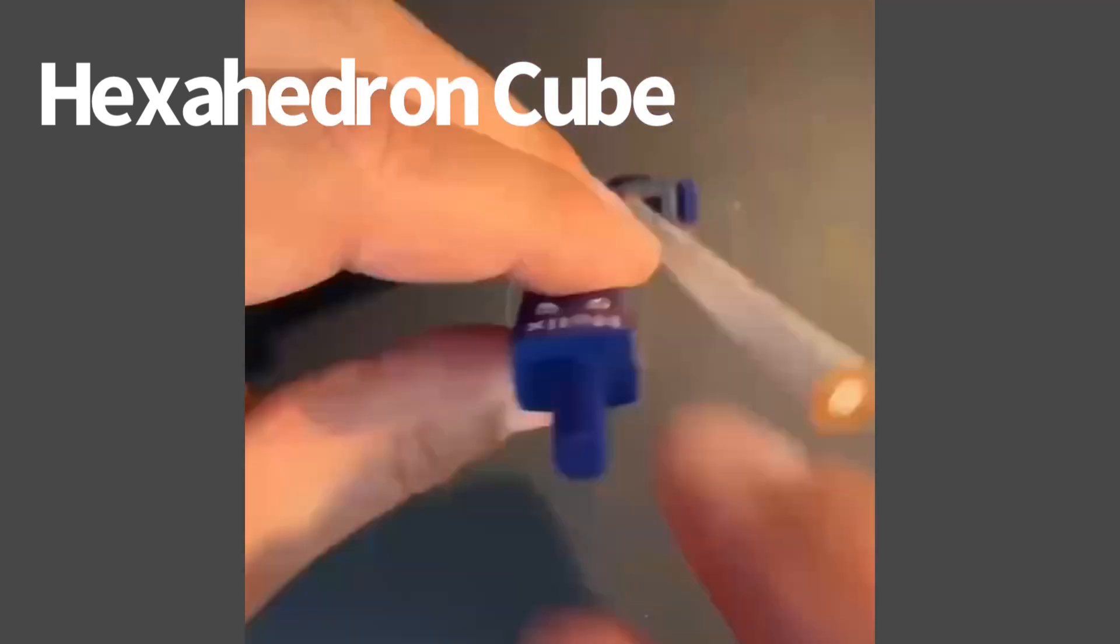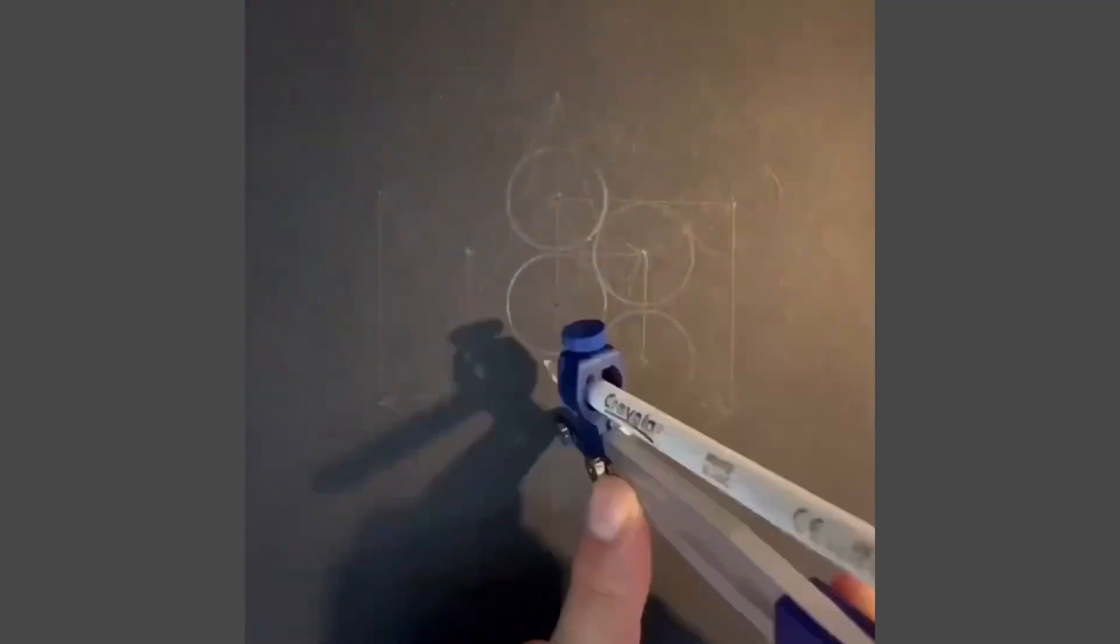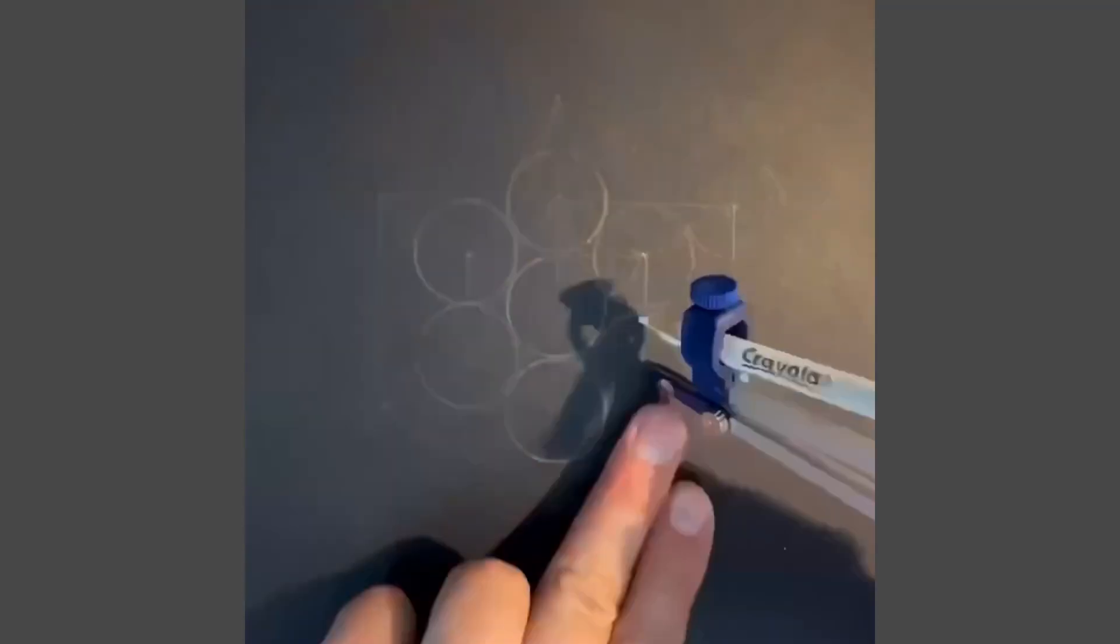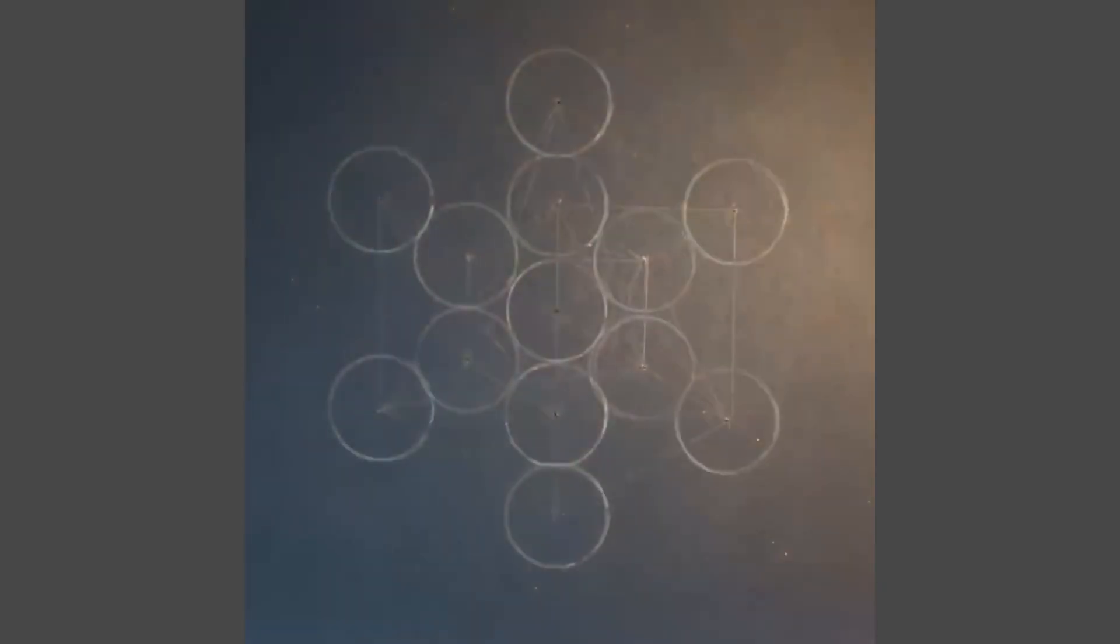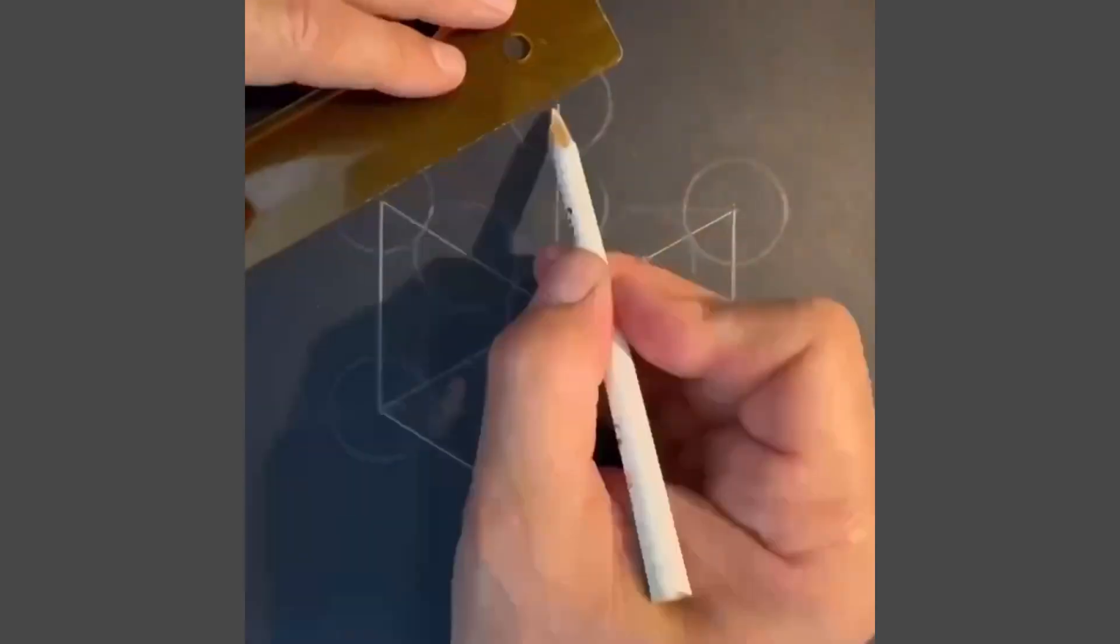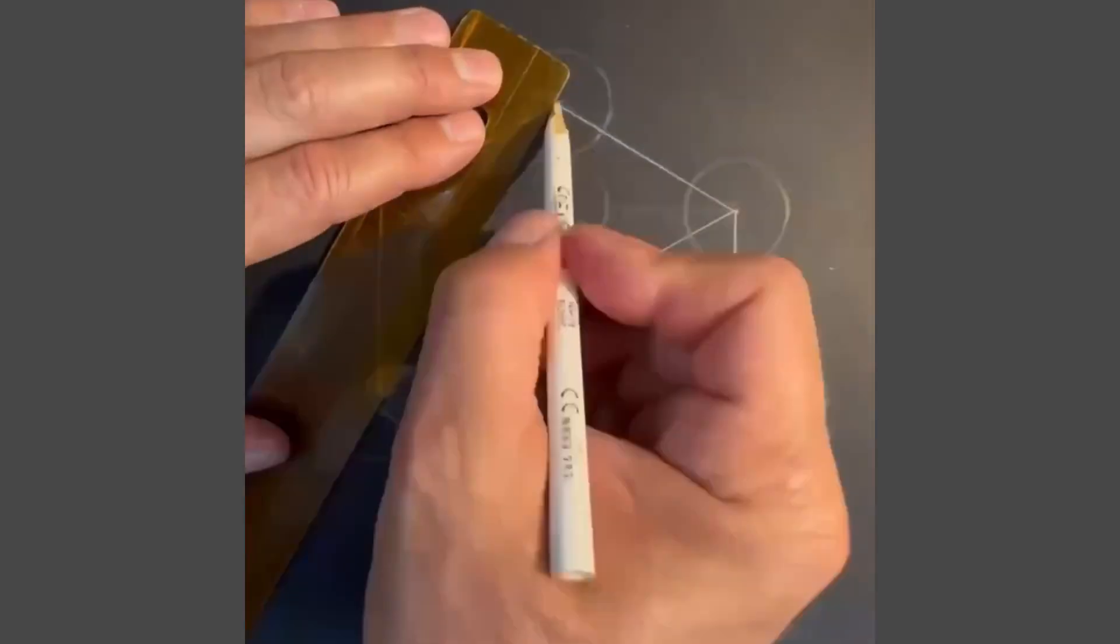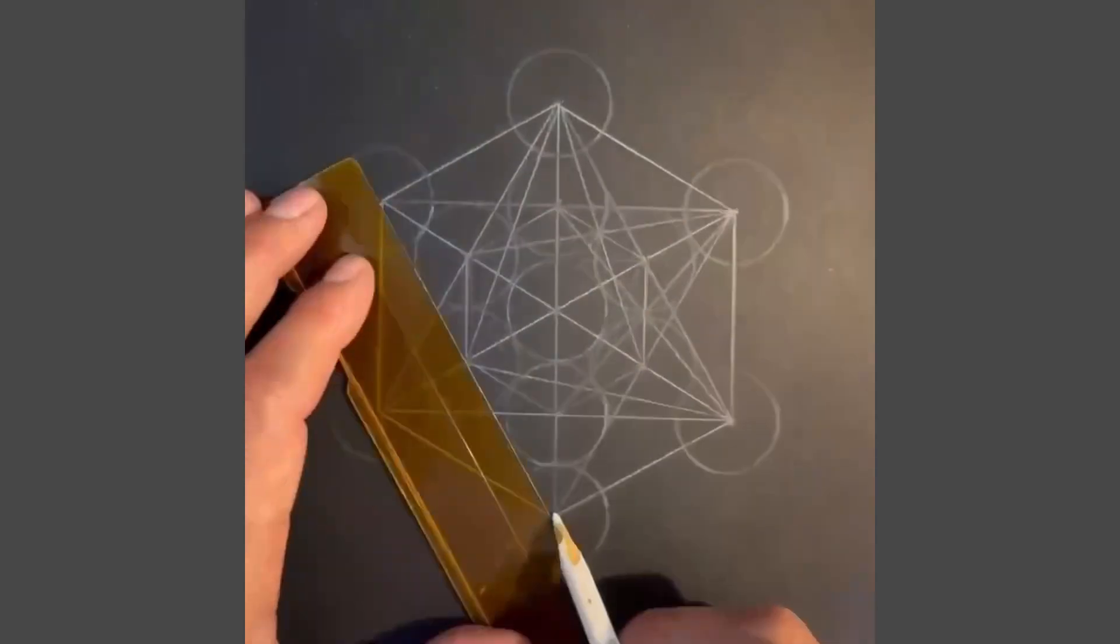To draw a hexahedron or a cube, you need to start with the Metatron's cube. I've shown this a few times now, but basically you draw 13 circles in this pattern. You connect all the centers of them together to create the Metatron's cube, which is used to draw all the five Platonic solids.